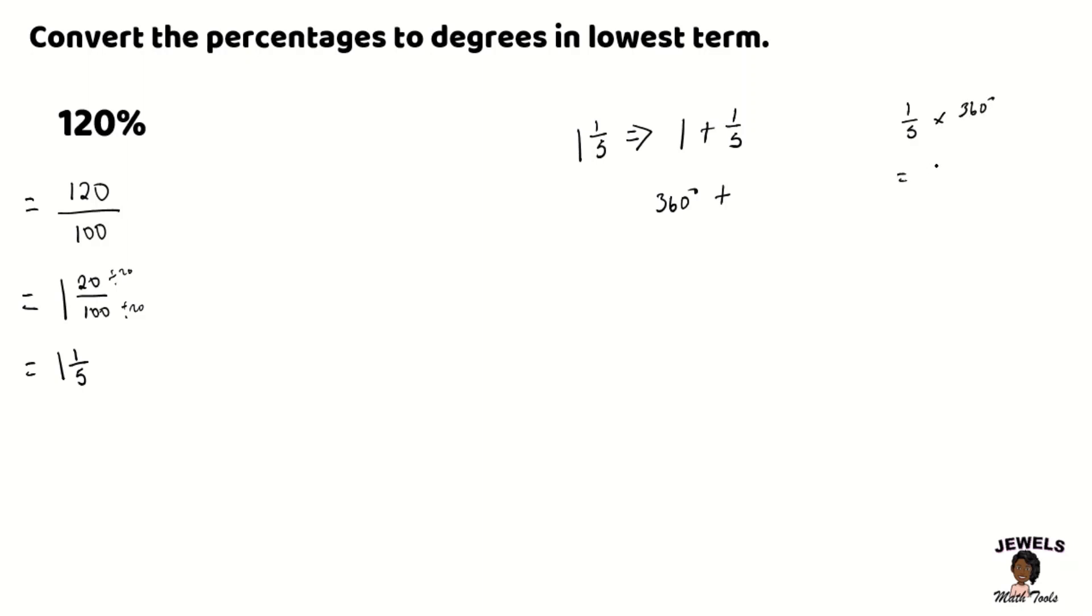And this will be added to 1 fifth of 360 so we have our 1 fifth being multiplied to 360 and we will be dividing 360 by 5 and in our previous part of the video we saw that when we divide both 5 and 360 by 5 this was equal to 72 degrees.